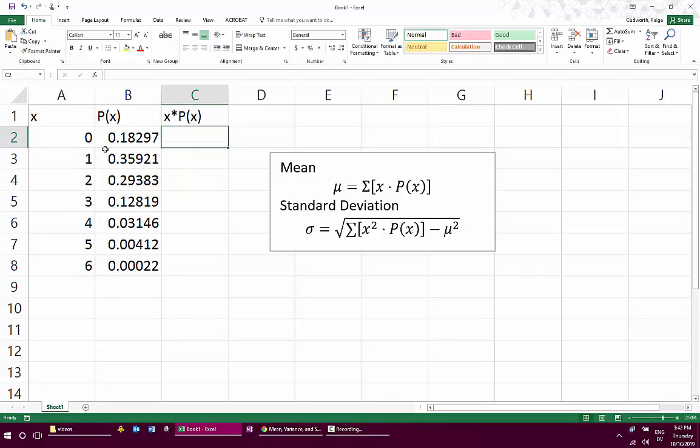So this is going to be the product of each of my x values times their probabilities. Now you could do this by hand, but I want to use an Excel formula. So I'm going to say equals and then click on my x value from that row times with the asterisk and then click on my P(x). Once I've done this for this first value, I can now use the same formula in all of the rows. So if you press enter to compute that,